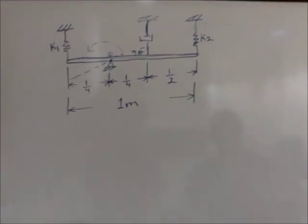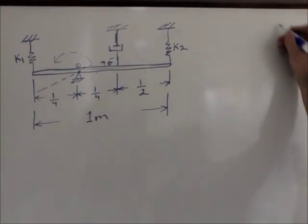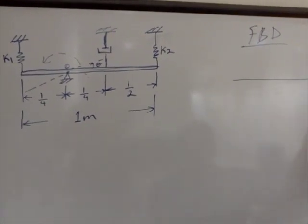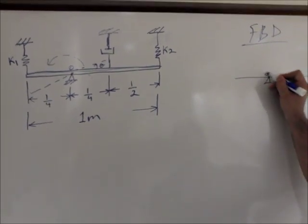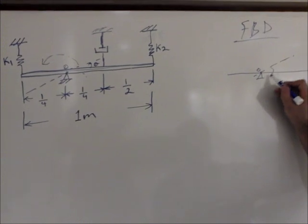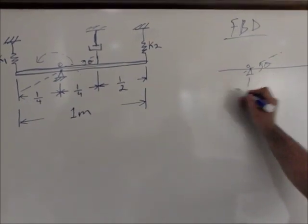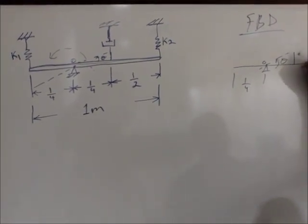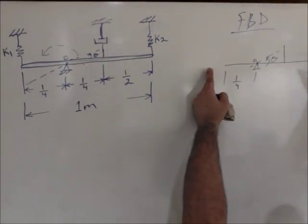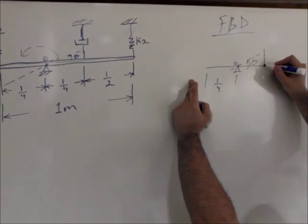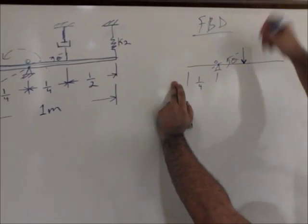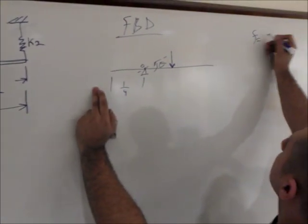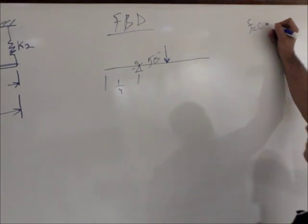To come up with the equation of motion, the first thing we need to do is draw the free body diagram. This is the pin at O, and this is theta. We know the distance here is one-fourth. For the damping — since the rod is going to be moving in that direction, we automatically know that the damping force is going to oppose it, pointing downward.